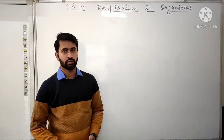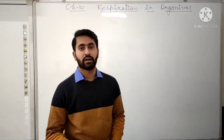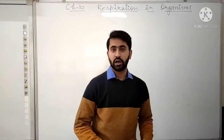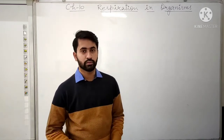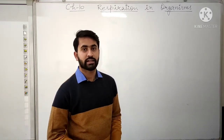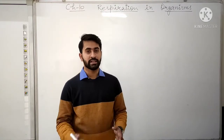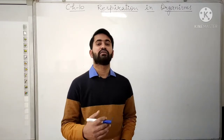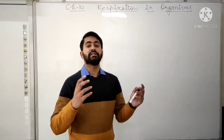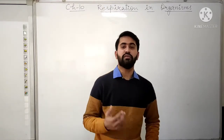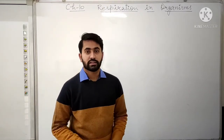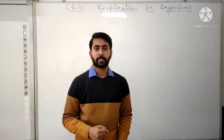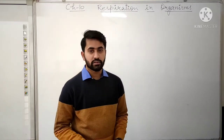In our previous video we read how different organisms breathe and respire, like the earthworms. The earthworms breathe through their wet and thin skin. Their skin is very thin and remains wet, so gases can easily pass through it. Their skin has a large amount of blood vessels, and the blood in the skin absorbs the oxygen and carries it to the different cells of the body.